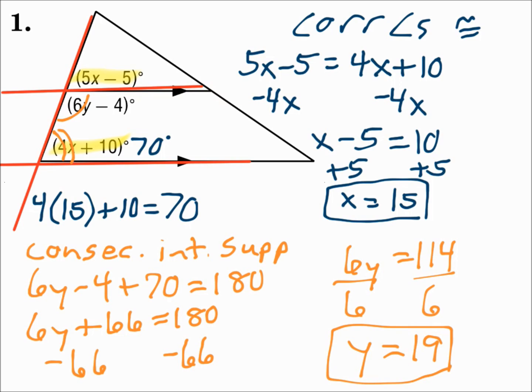So the first angle pair was corresponding angles. Those are congruent, so their measures equal each other. The second pair was consecutive interior angles. Those measures add up to equal 180. Identify the angle pair and set up your equation accordingly.